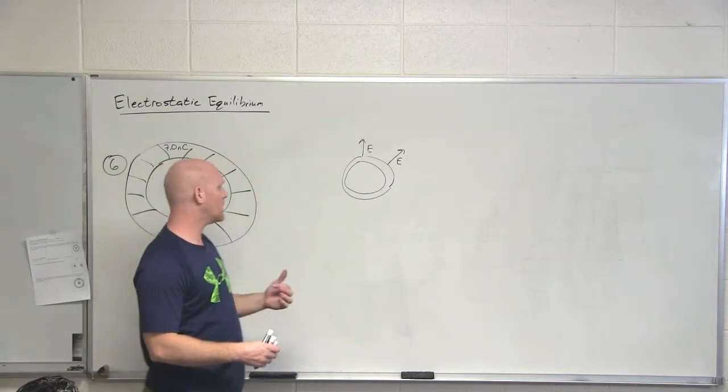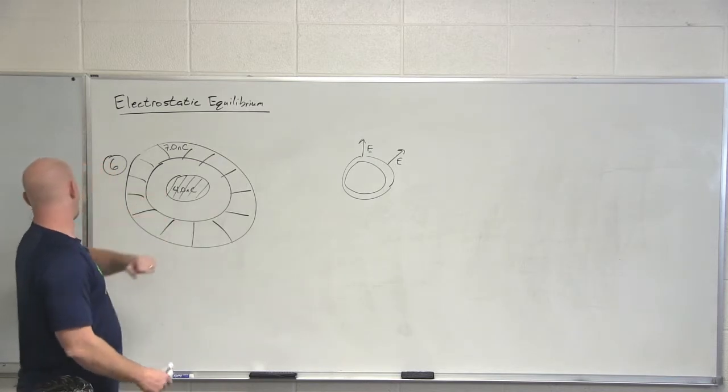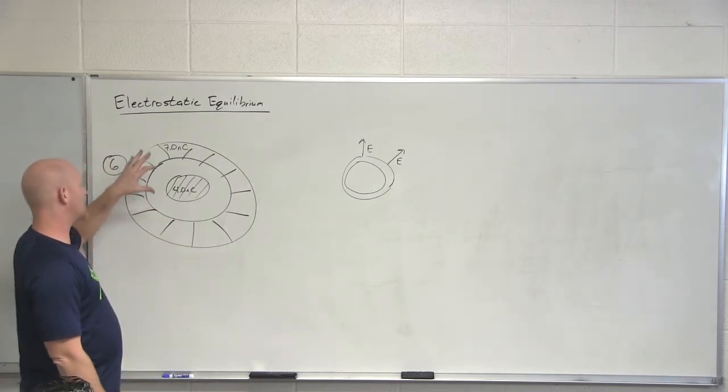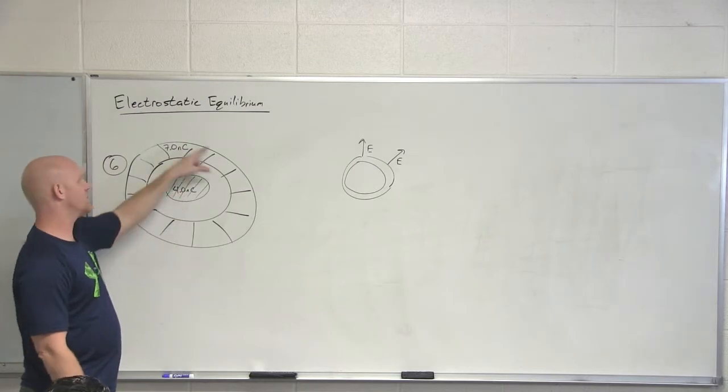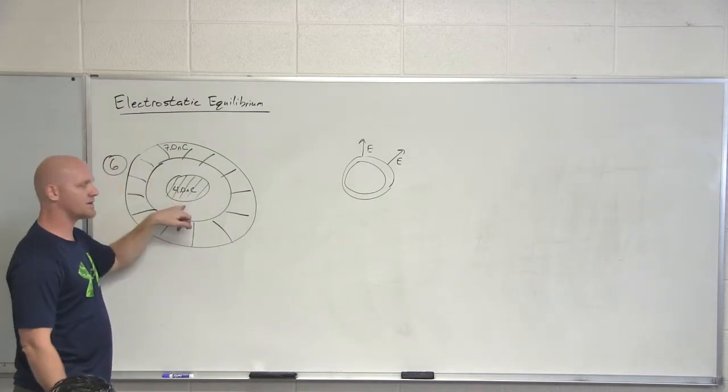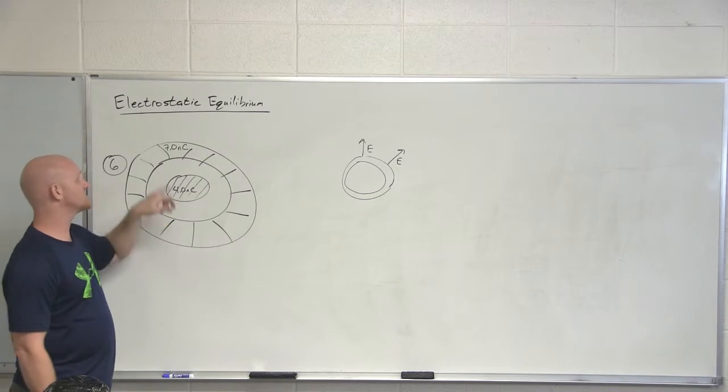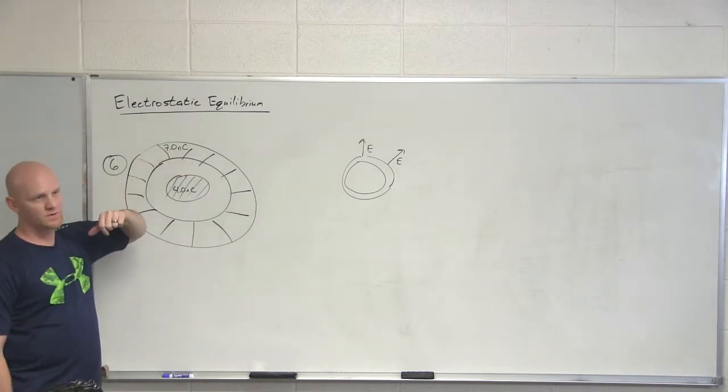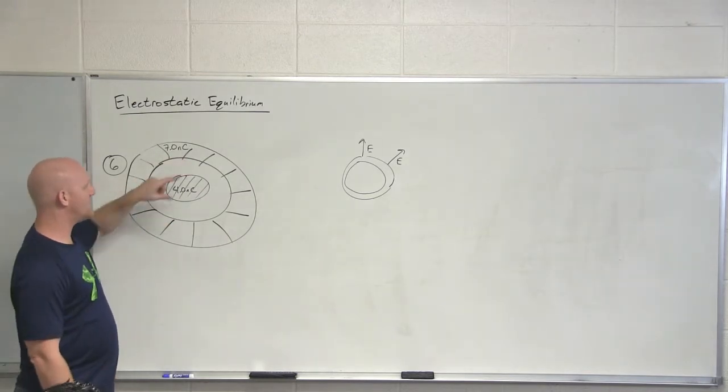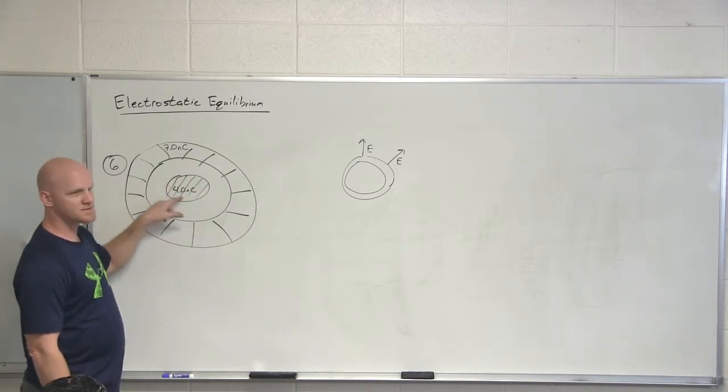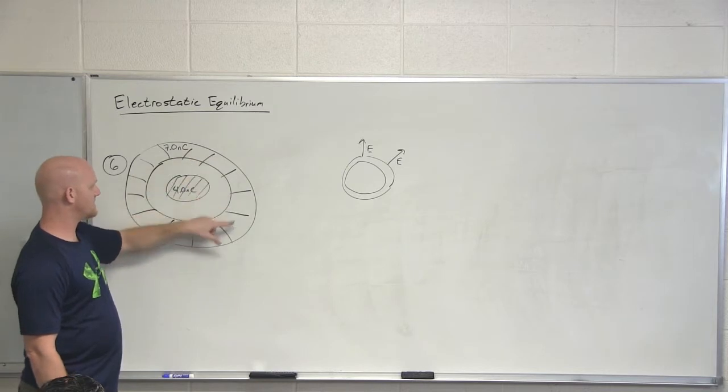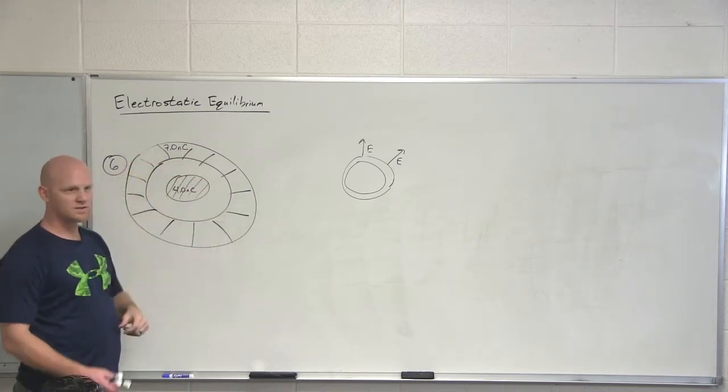Which takes us to problem number six. We've got two lovely spheres here - one that's solid in the center and one that's hollow on the outside. The solid one at the center has positive four nano coulombs of charge. The one on the outside has seven nano coulombs of charge. However, because these are conductors, charges can move around. Because of this positive charge in the center, guess what some of the electrons in this outer surface want to do?